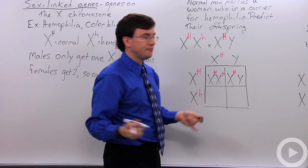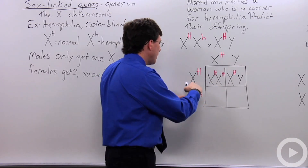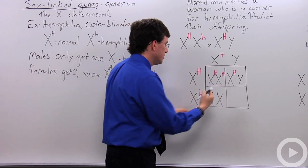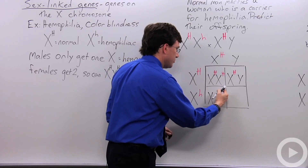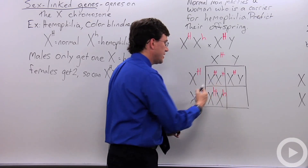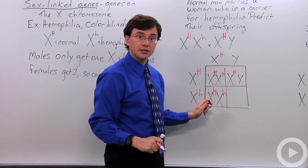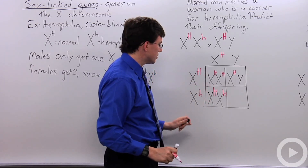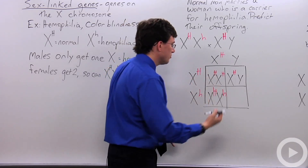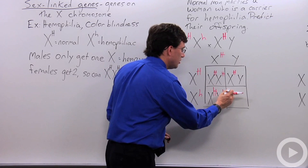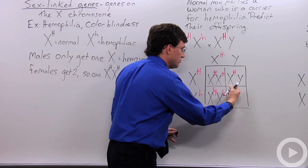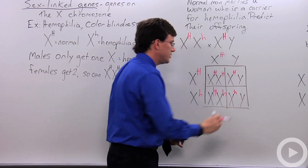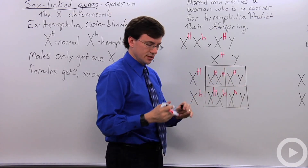That combination — X and Y — means son. The next daughter gets X^h from mom and X^H from dad. Remember, you always put the dominant allele first regardless of which parent you get it from. So the daughters are both normal. Mom gives her X and dad gives his Y, giving us our two sons.